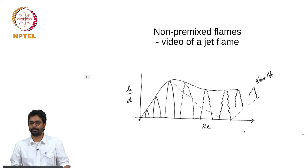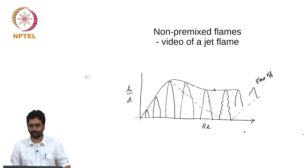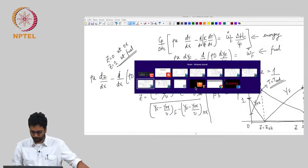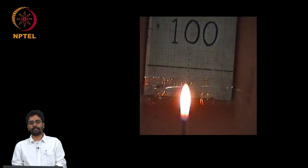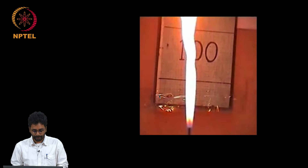We saw yesterday that simple scaling analysis indicates that h over d will linearly increase with Reynolds number until the flame becomes turbulent, and then the flame height goes down a little bit and then settles down at a constant height. I will show you a video of this phenomenon where you can observe the linear increase in height with increase in Reynolds number.